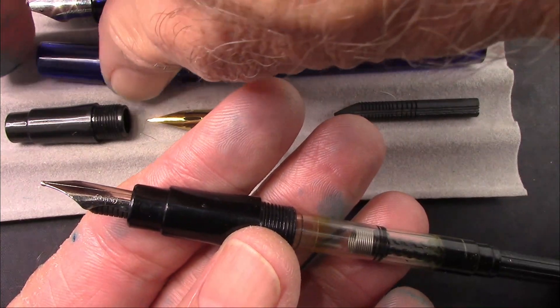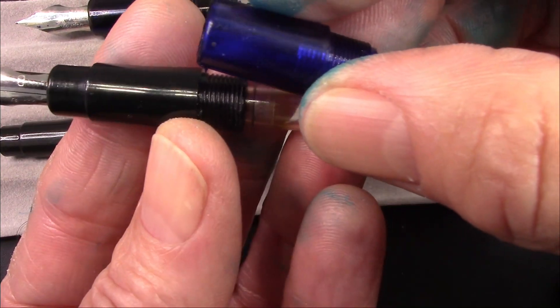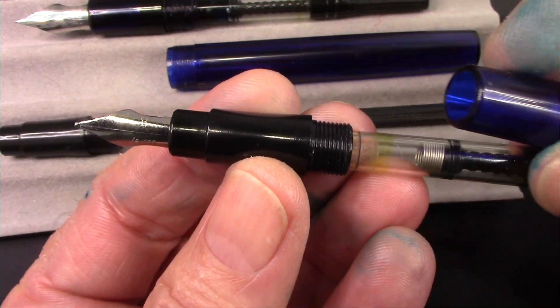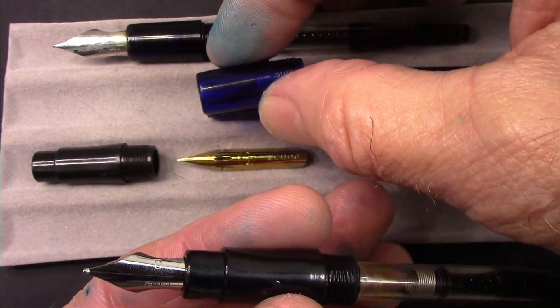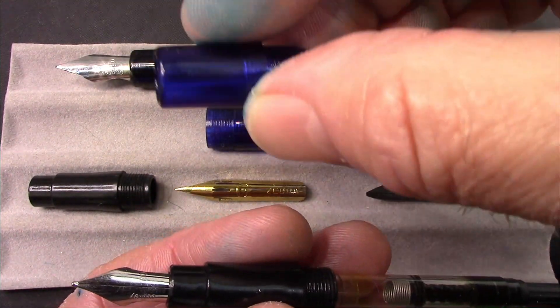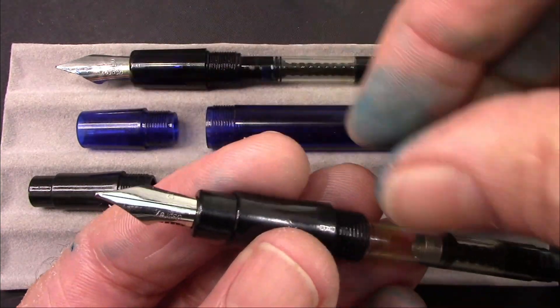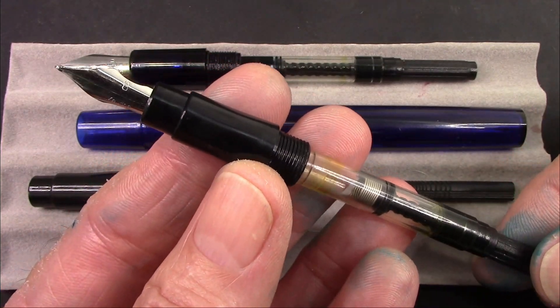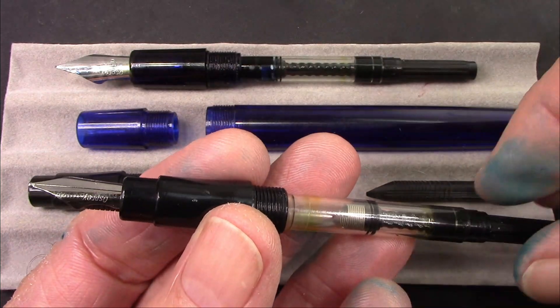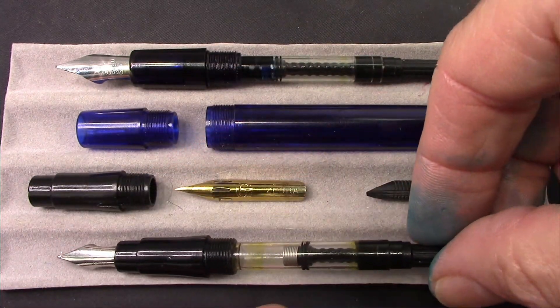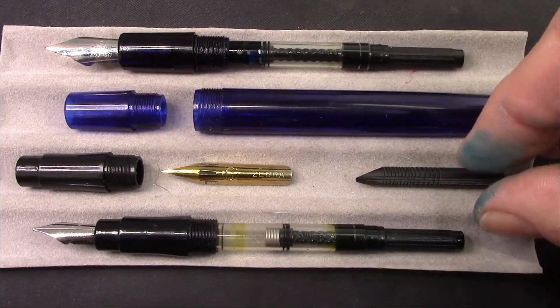So in the package that they sent me, they sent me this section, which will accommodate these number five nibs. So your Madison will be able to not only take the number six nibs, but also the number five nibs and all the other nibs with this new section. So that's the basic difference between the pens. And I think it's really great that Osprey has updated the Madison to accommodate all the different style nibs now with this section. So there'll be two sections.